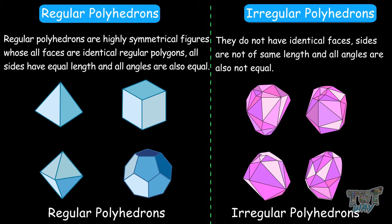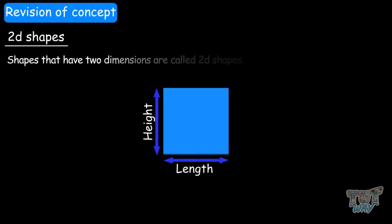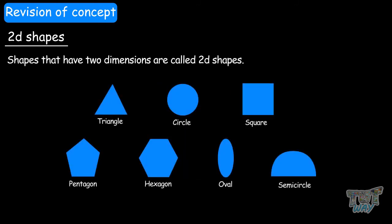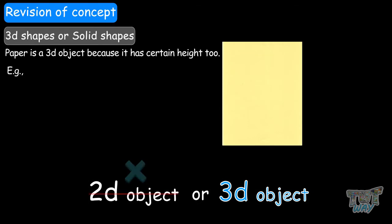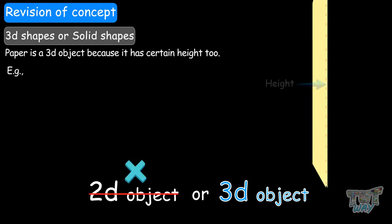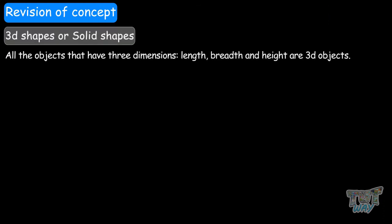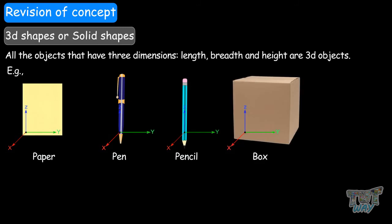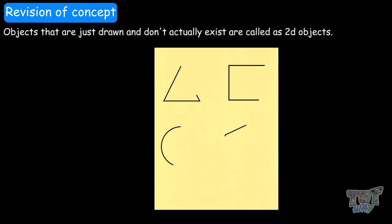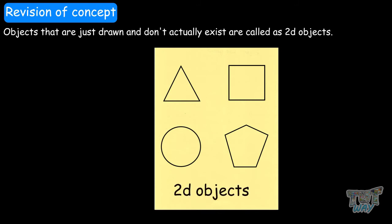So let's revise what we have learned. First of all, we started with what are 2D shapes — shapes that have two dimensions are called 2D shapes, and they can only be drawn on a flat surface. We also learned that a piece of paper is not 2D even though it is extremely flat, because it does have a certain height. So it is considered a 3D object, which has three dimensions: length, breadth, and height.